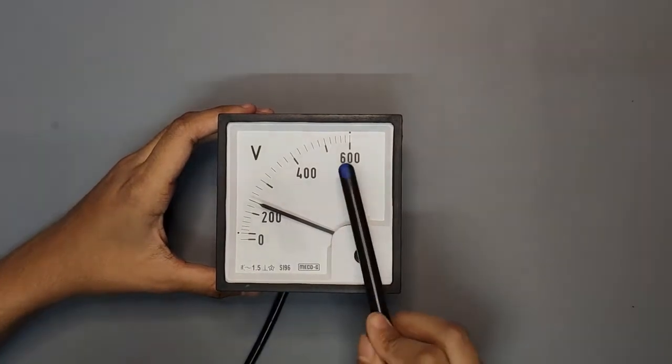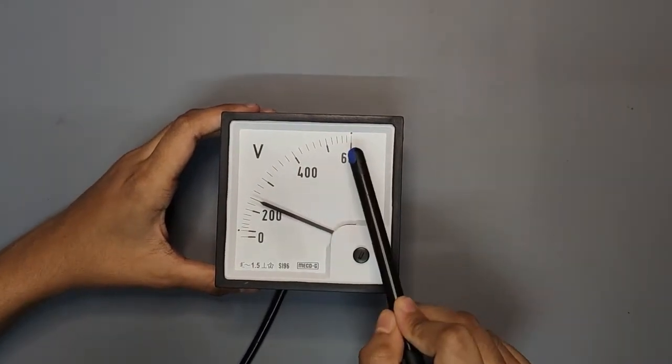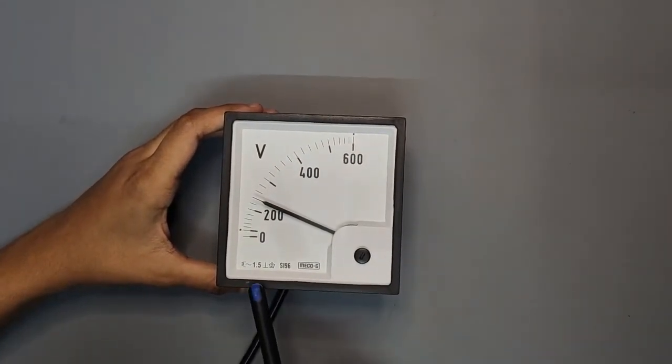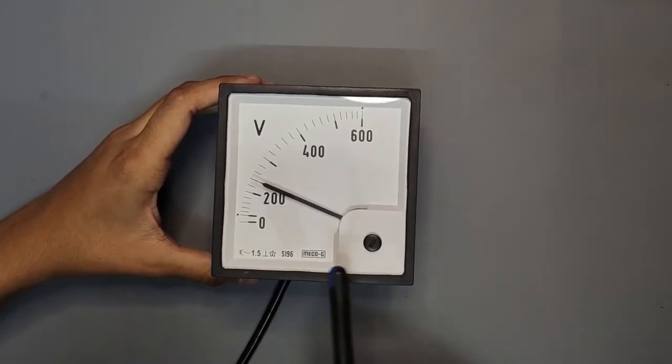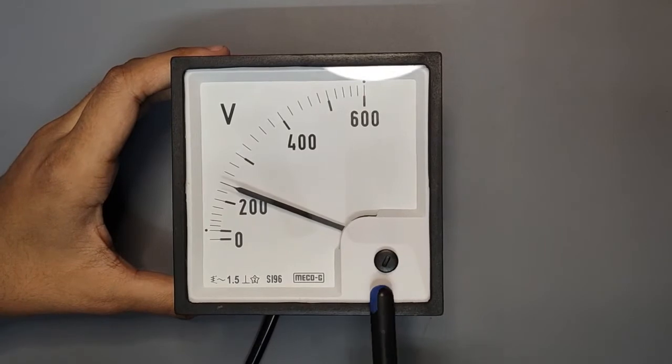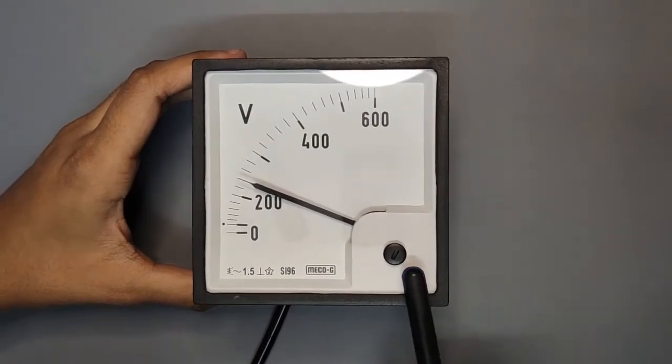In this case, you can measure up to 600 volts. You can measure to this point. If you have the zero set here, then you can set it to this point.